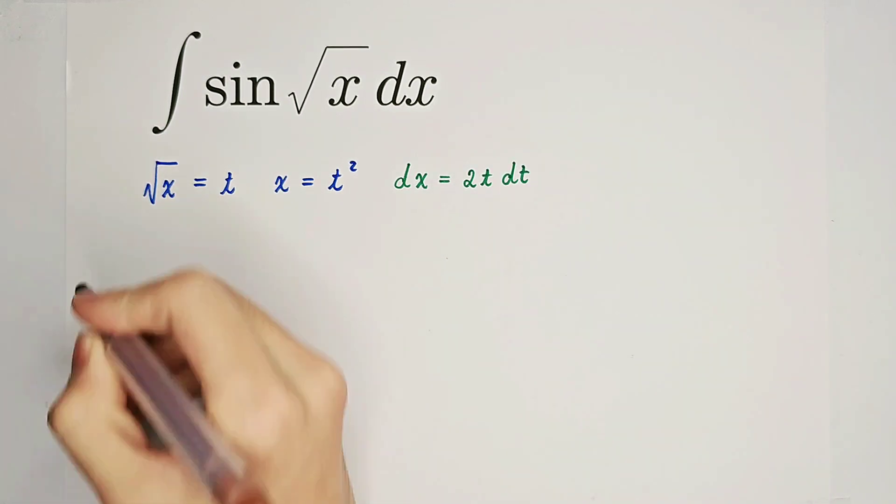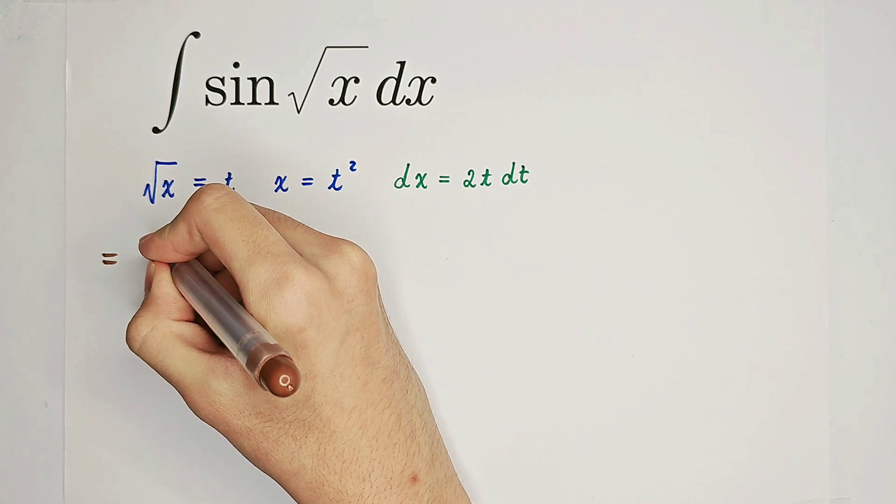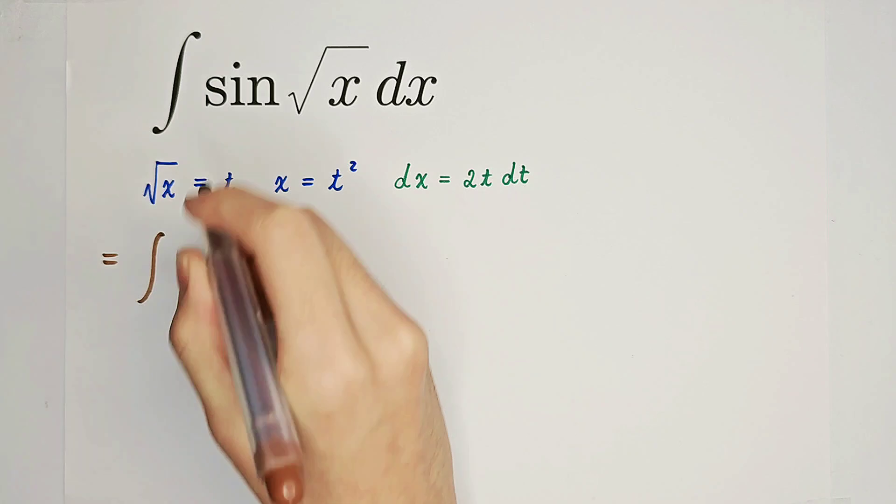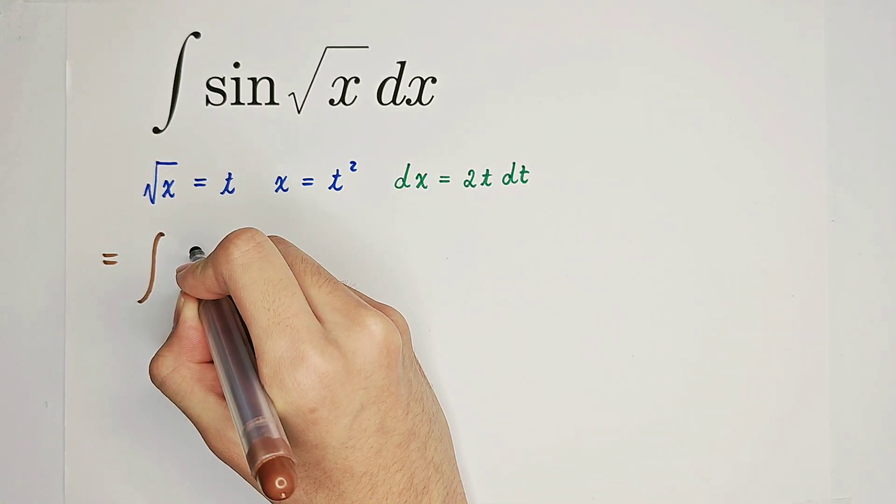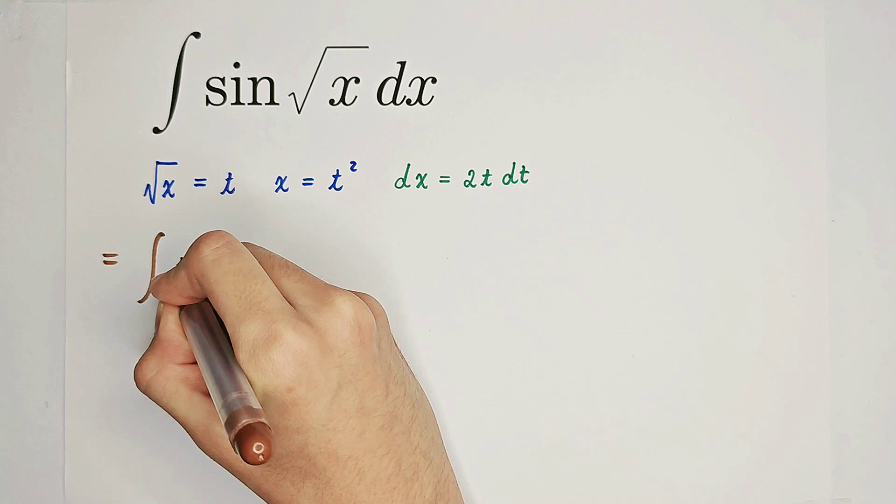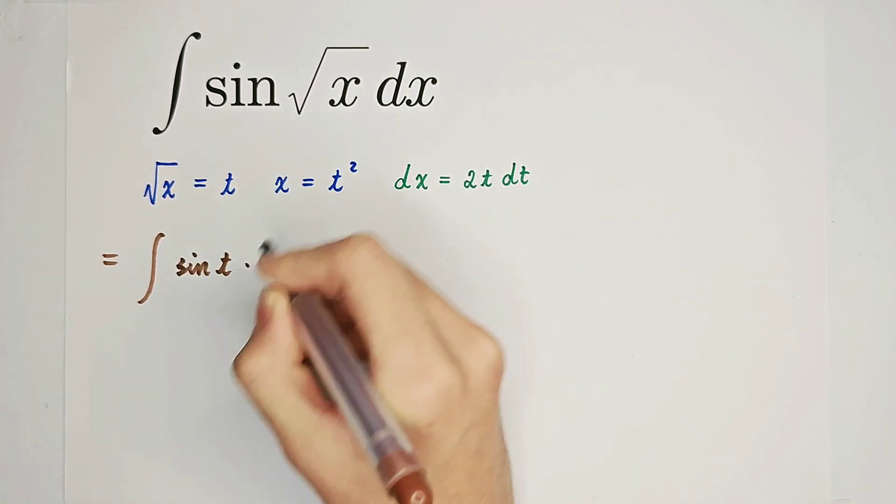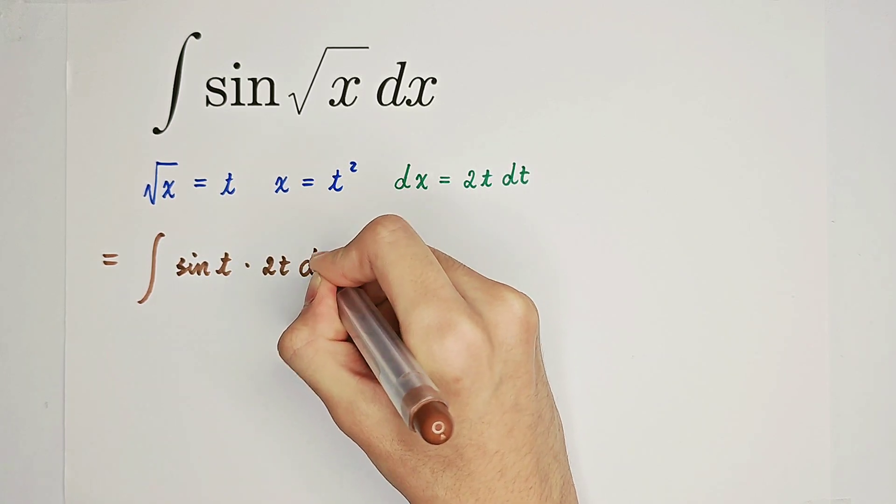So our original integral can be written as the integral of sine of square root of x becomes sine of t. dx is 2t dt.